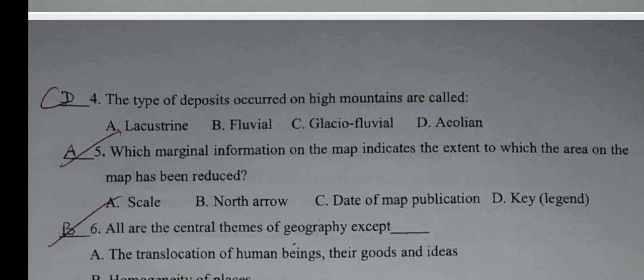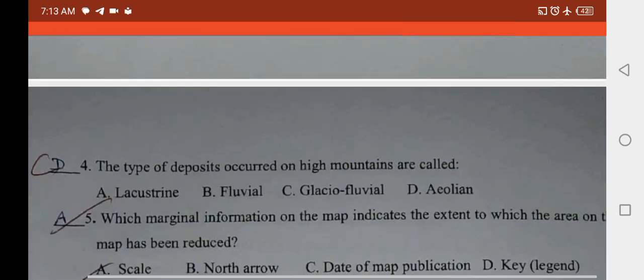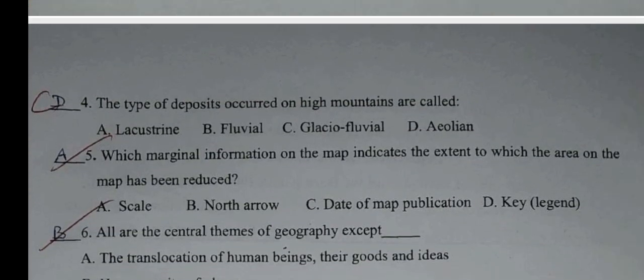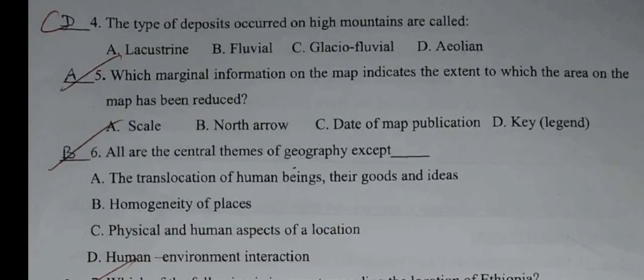Question number four: The type of deposit that occurred on a high mountain. A: Lacustrine. B: Fluvial. C: Glacio-fluvial. D: Aeolian. The correct answer is C.